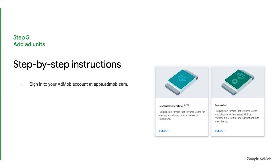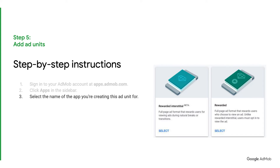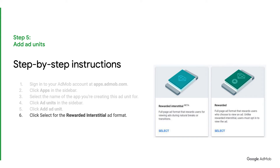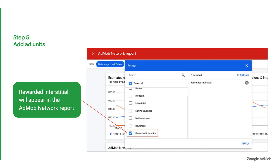Number 1: Sign in to your AdMob account. Number 2: Click Apps. Number 3: Select the name of the app you're creating this ad unit for. Number 4: Click Add Units. Number 5: Click Add Ad Unit. Number 6: Select Rewarded Interstitial. Once you've successfully implemented the rewarded interstitial ad unit, the rewarded interstitial ad will appear as a new format in the AdMob Network report.